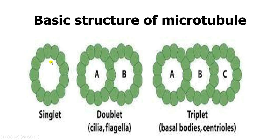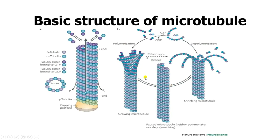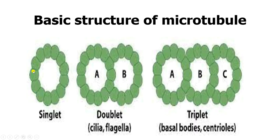Taking a cross section of the microtubules, you can see a singlet arrangement. A doublet arrangement has a primary complete microtubule called A, plus an additional partial microtubule called B. A triplet has the primary A plus two partials, B and C. The doublet system is found in the cilia and flagella, while the triplet system is found in the centrioles. A pair of centrioles gives you a centrosome.